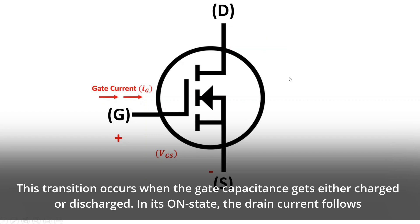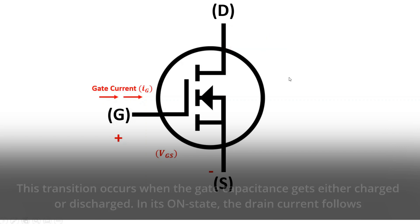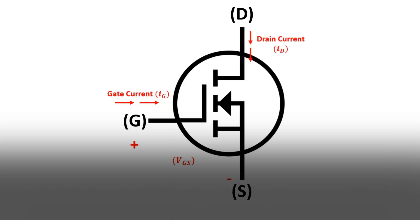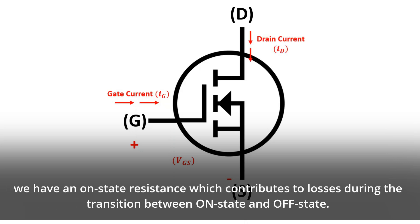In its on state, the drain current flows from the drain terminal to the source terminal. Furthermore, between the drain and source, we have an on-state resistance which contributes to losses during the transition between on state and off state.